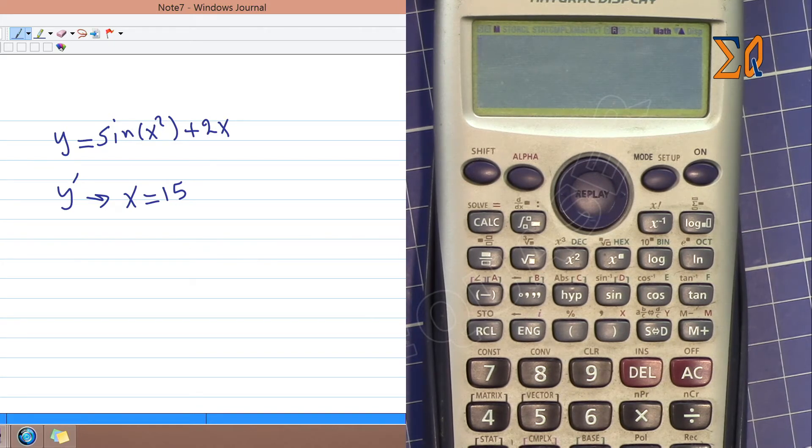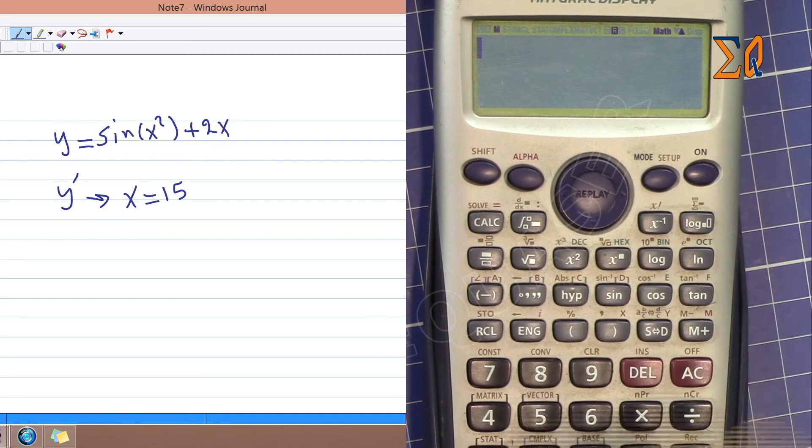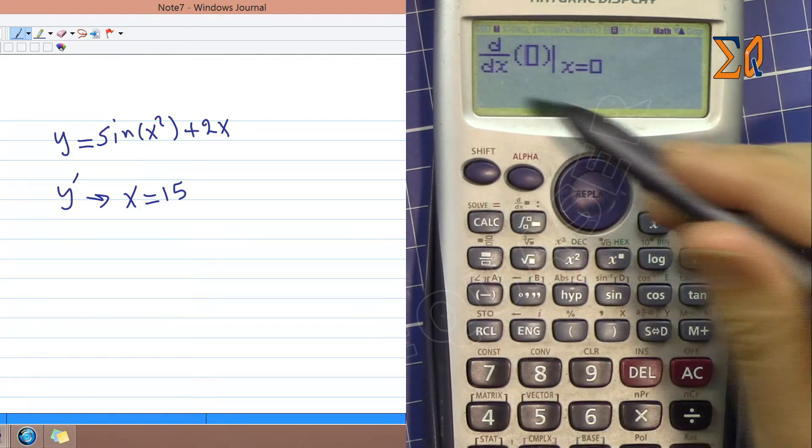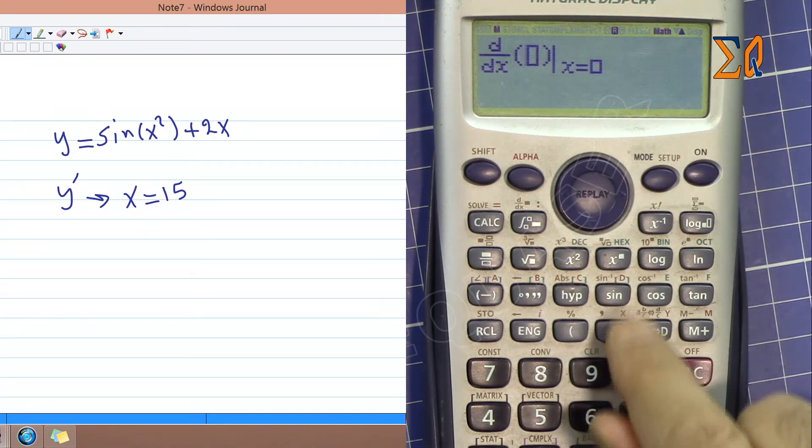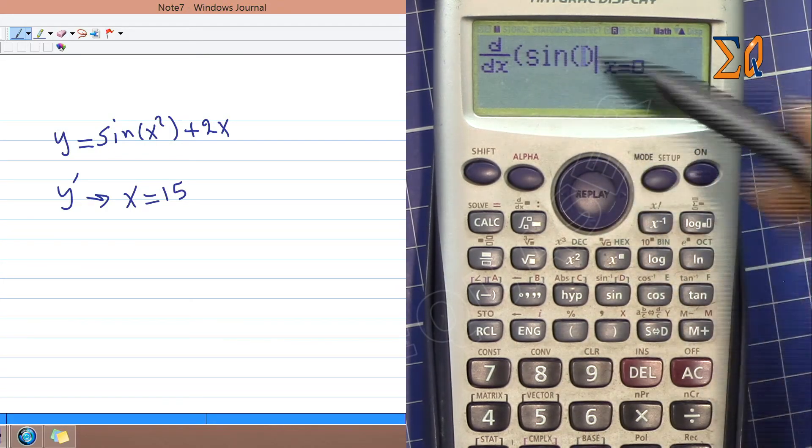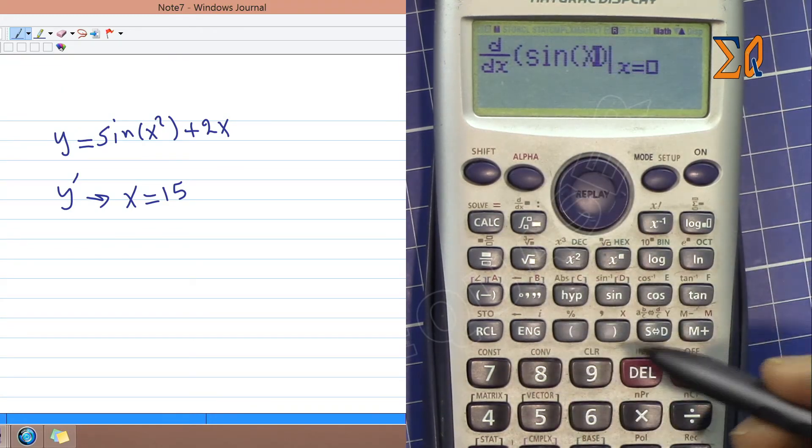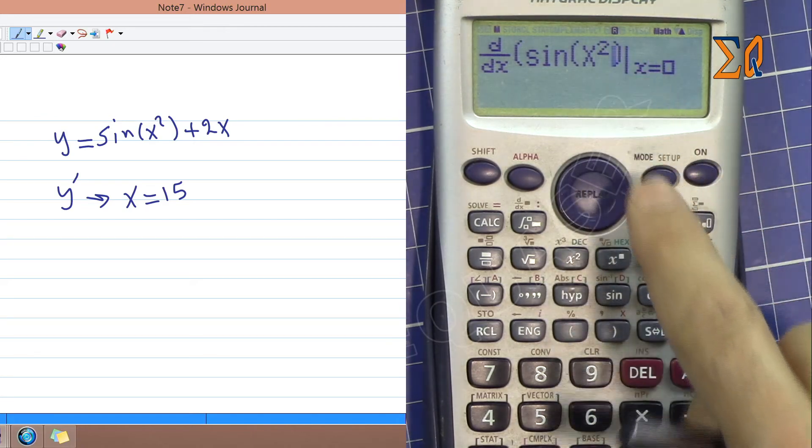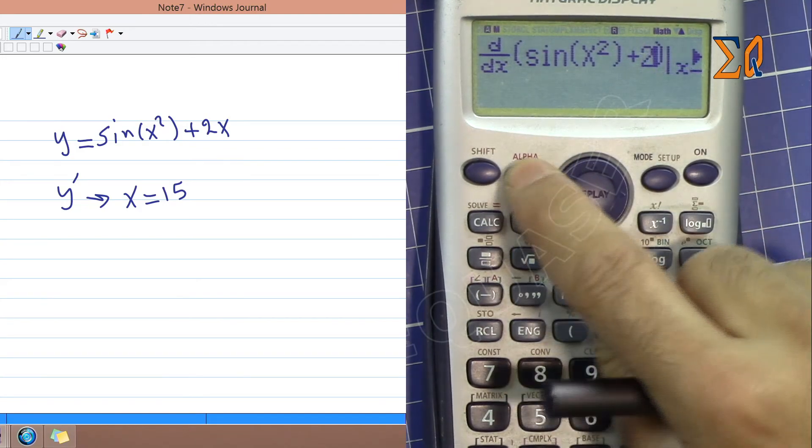Let's do this on the calculator. To evaluate the derivative, press shift and this button - you'll see d/dx. Now enter your equation. I press sine, and you see an open parenthesis. Make sure we don't forget the closing parenthesis. Alpha, X, then square - that's x². Close the sine, then plus 2, then alpha, X. The equation is entered as shown on my screen.